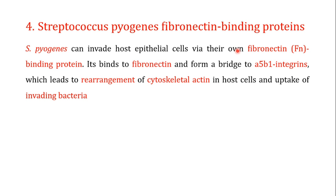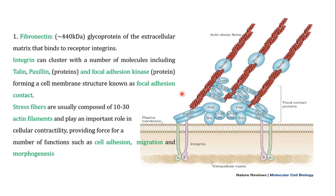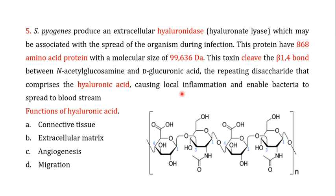When S. pyogenes infects a host, it utilizes its own fibronectin binding proteins to force fibronectin to bind to the integrin, thereby triggering rearrangement of the cytoskeleton and allowing uptake of the invading bacteria.